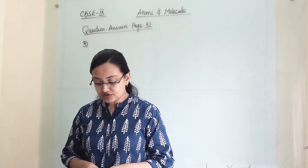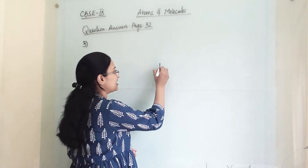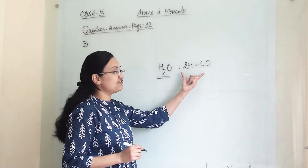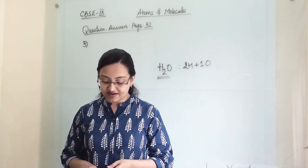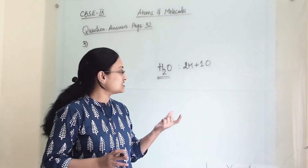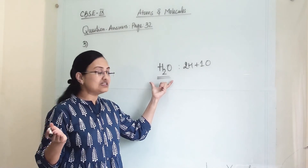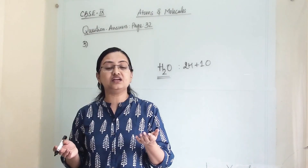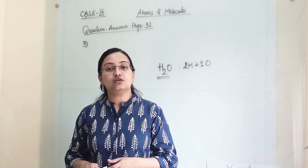The fourth question asks which postulate of Dalton's atomic theory can explain the law of definite proportion. The law of definite proportion means that when writing H₂O, two atoms of hydrogen react with one atom of oxygen — this is a definite proportion and you cannot change the molecular formula of any compound. Postulate number 6 explains this law, which states that the relative number and kinds of atoms are constant in a given compound. This means anywhere on Earth, one molecule of water will always contain two atoms of hydrogen and one atom of oxygen. So the sixth postulate explains the law of definite proportion.